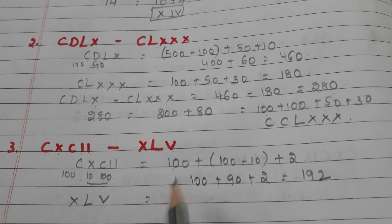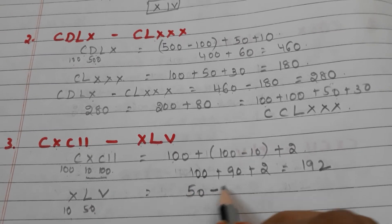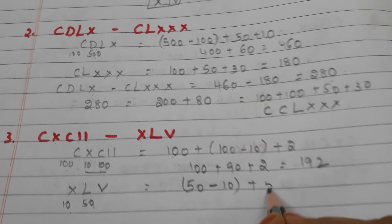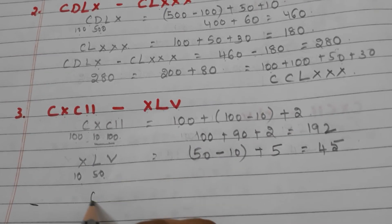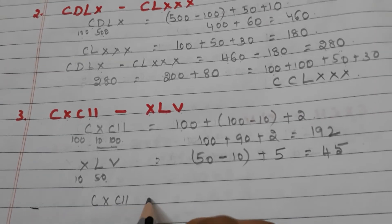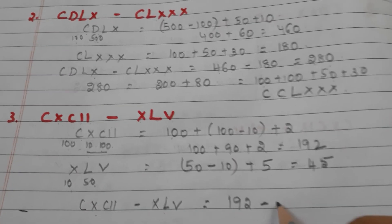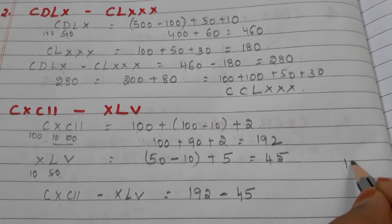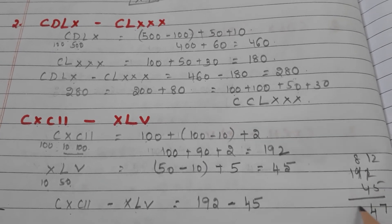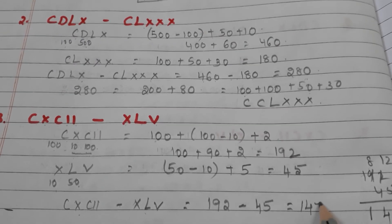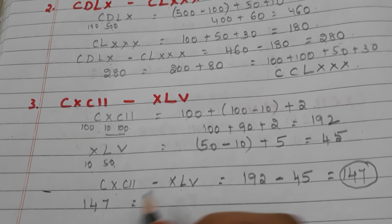Next, take XLV. X means 10, L means 50. The smaller number is first and the bigger number is next, so we subtract: 50 minus 10 equals 40, plus 5 equals 45. Now the statement CXCII minus XLV is 192 minus 45. 192 minus 45 equals 147.